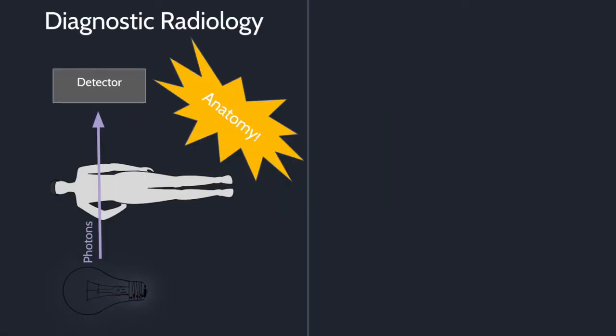In traditional diagnostic radiology, images primarily display anatomy. For CT and radiograph, we shine a light bulb of sorts which emits photons through a patient and onto a detector. The detector receives those photons and gives us anatomical information.